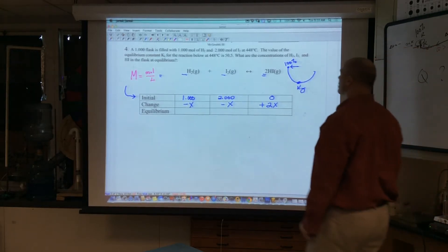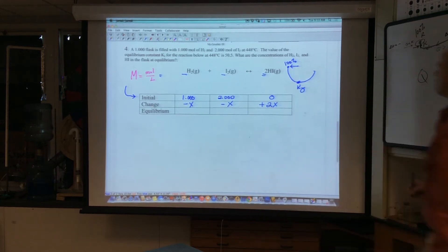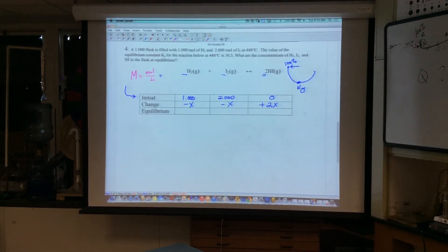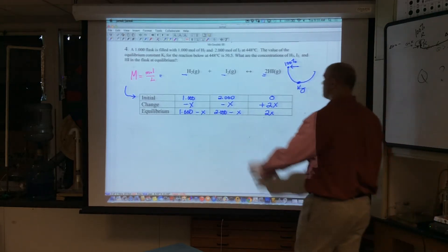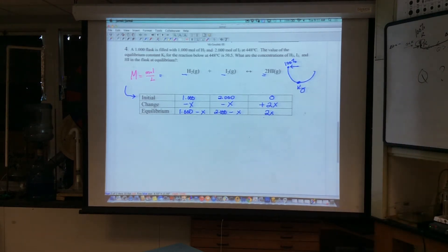Now, we have no information other than we know what the value of KEQ here, or KEC is here. So what do we do? We keep going. 1.00 minus X is the value at equilibrium. We started with 1 molar, and we're minus X. Here we're 2 molar, and we're minus X. And here it's plus 2X plus 0 is 2X. So these are my unknown quantities at equilibrium. Let's do our equilibrium expression.